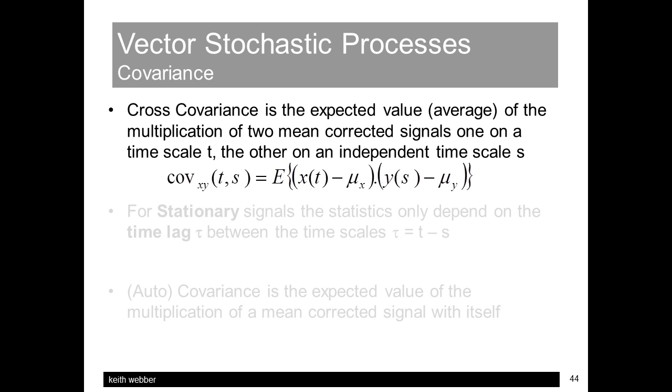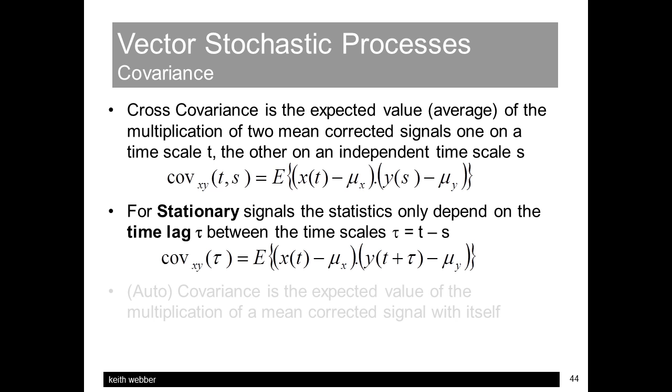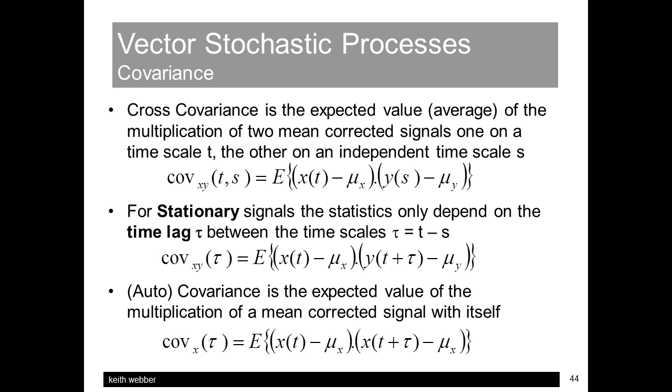To briefly recap, correlation is a measure of the relationship between two different signals on two different timescales, and covariance is correlation with allowance for non-zero mean signals. Now stationary signals have statistics that don't change with time, and so the covariance only depends on the difference in time between the two signals. Autocovariance is a measure of how rapidly one signal changes in time, and in both cases signals have to be multiplied either by themselves or by each other.